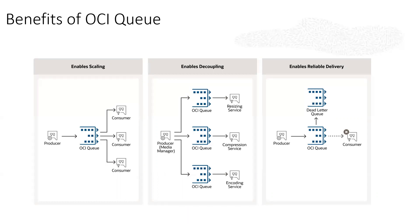Users can publish, consume, and delete messages, and they can update the visibility timeout of the message as well. OQS helps to decouple applications and scale them independently. It also supports dead letter queue and ensures messages are not lost if not acknowledged by a consumer. OQS supports REST and the industry-leading STOMP protocol, as well as SDKs in multiple languages.